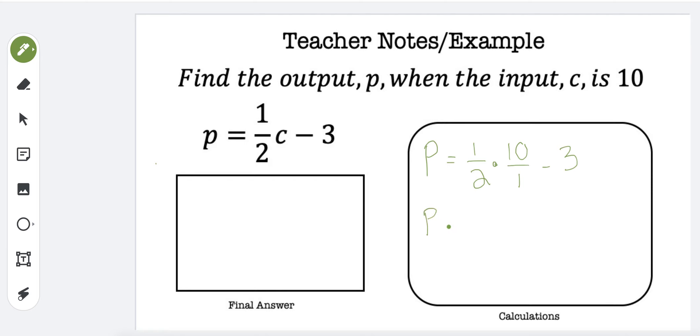So P is going to equal 5 minus 3, and 5 take away 3 is 2. So P is going to equal 2. So our answer is P equals 2.